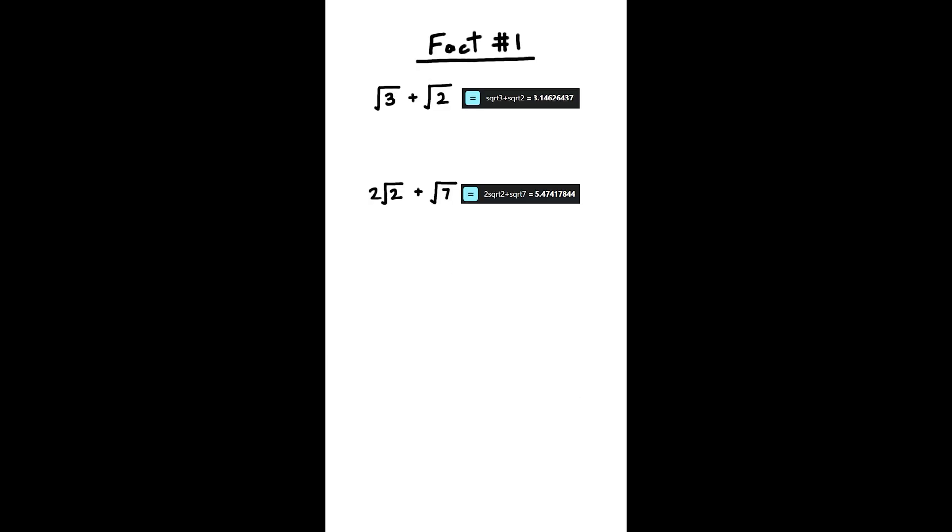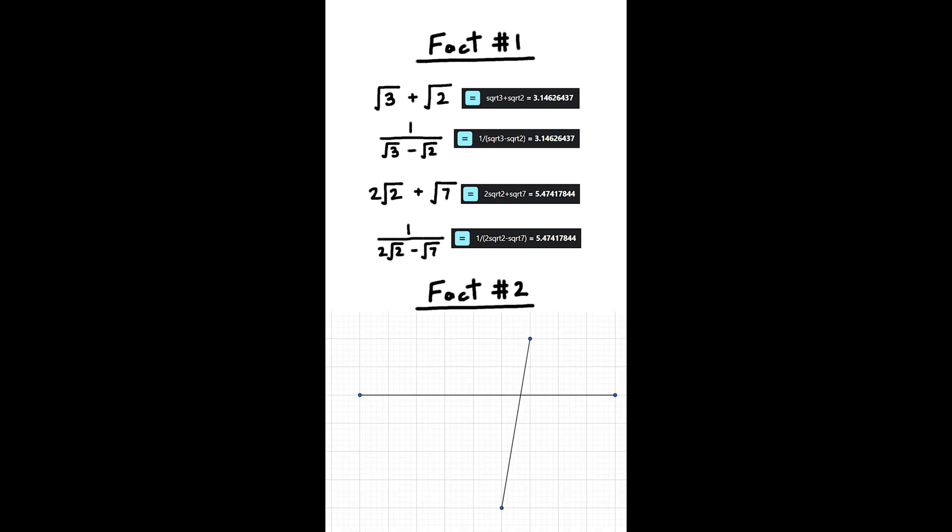First, the sum of any two square roots equals the reciprocal of the difference. Second, if I give you two intersecting line segments, the area of this enclosed quadrilateral will always remain the same no matter how much you slide the lines around.